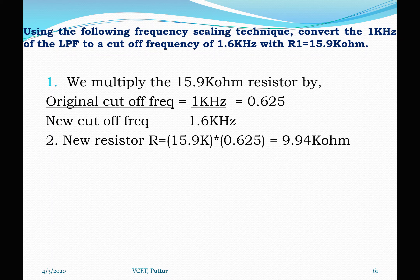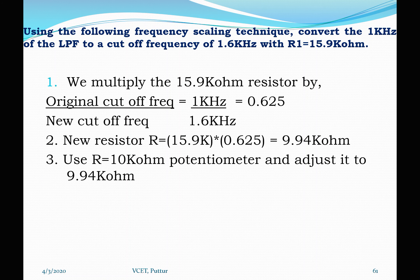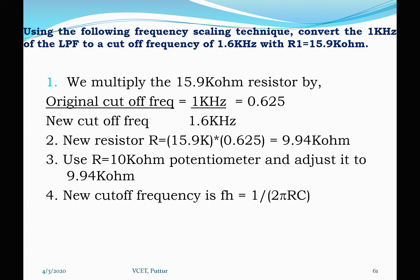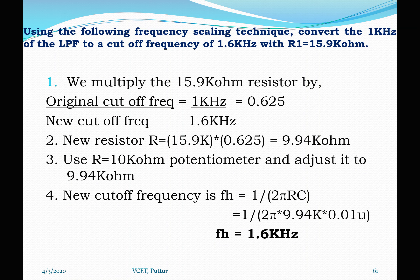We know 9.94 kΩ is not a standard value, so we can use a 10 kΩ potentiometer and adjust it to 9.94 kΩ. Using the cutoff frequency equation, we verify: FH = 1 / (2π × 9.94 kΩ × 0.01 µF) = 1.6 kHz. This is how we change the original cutoff frequency to a new cutoff frequency using the frequency scaling technique.